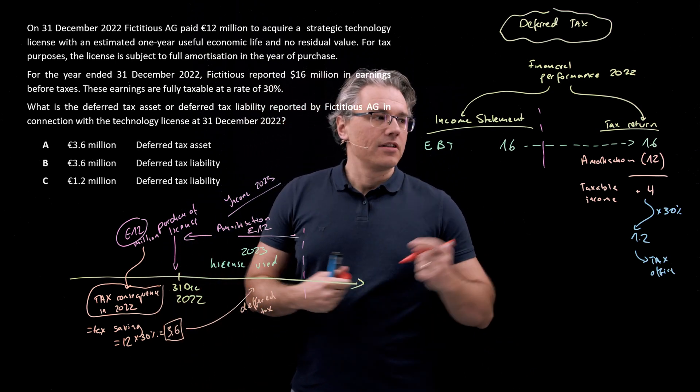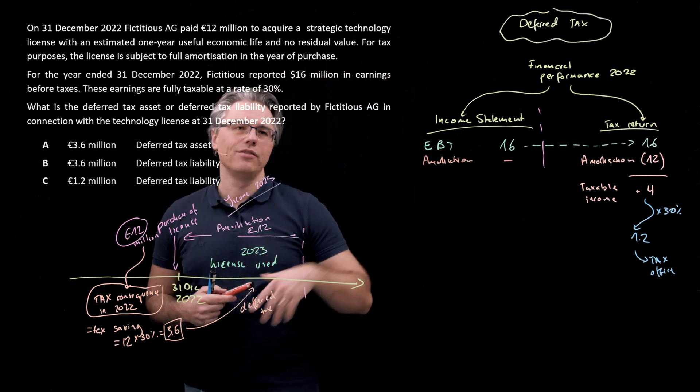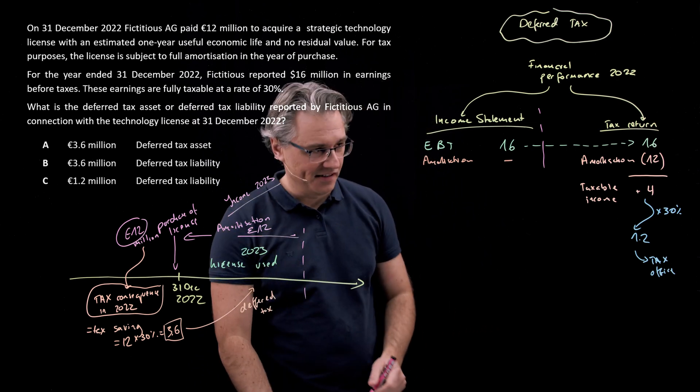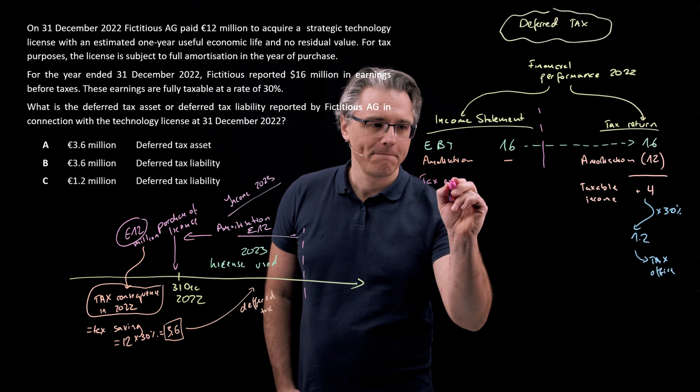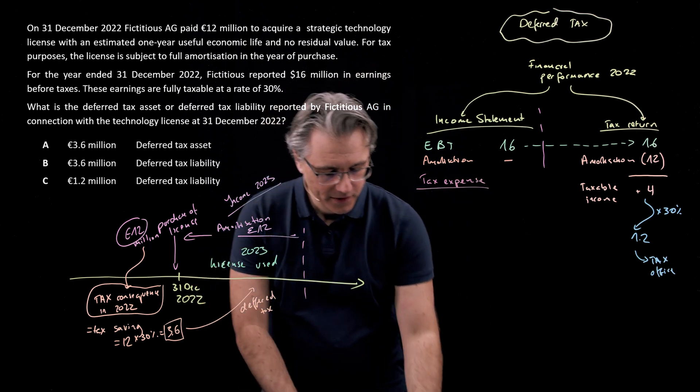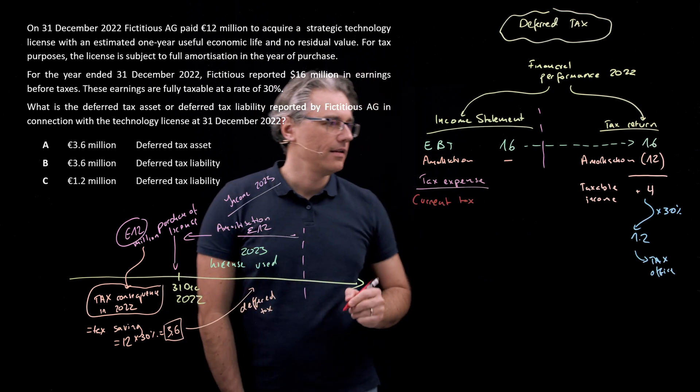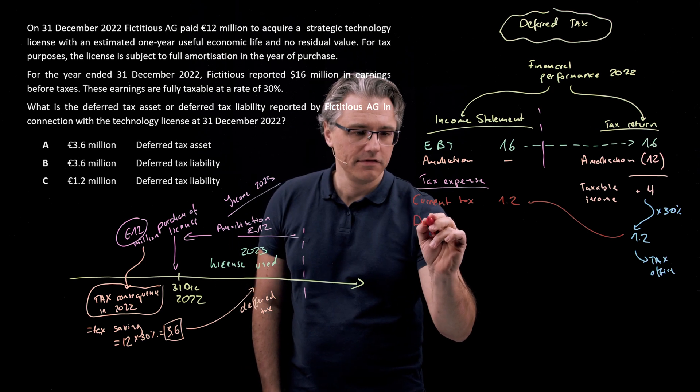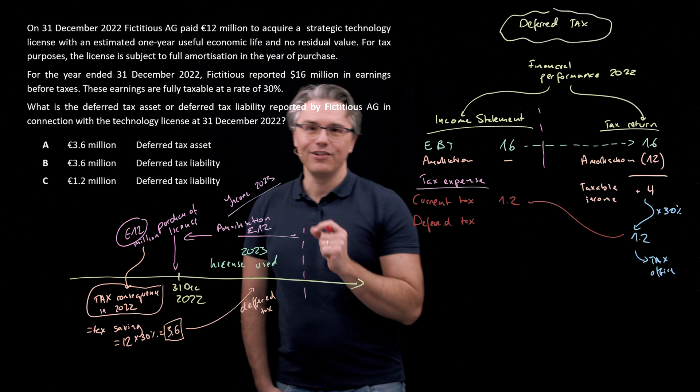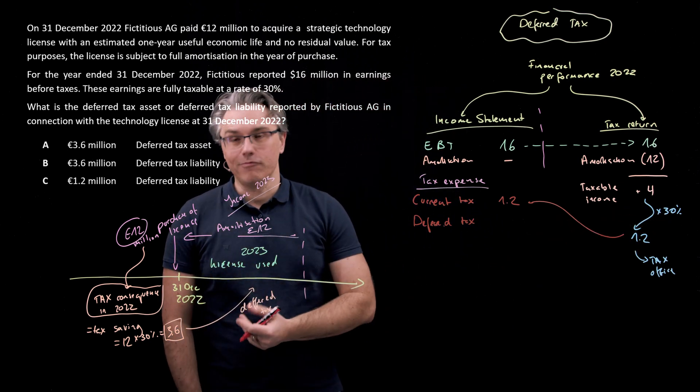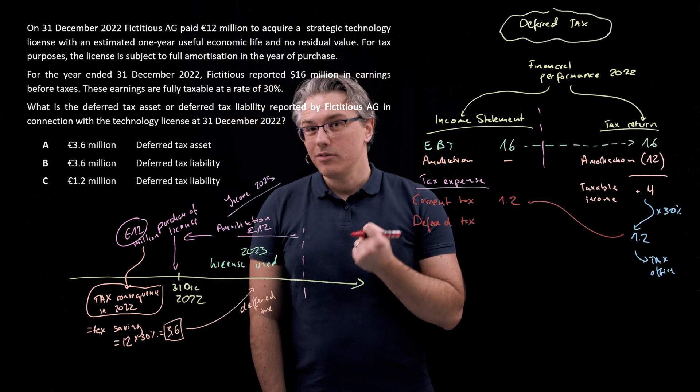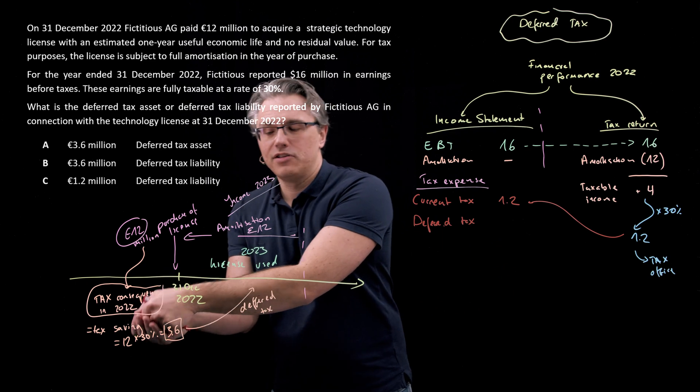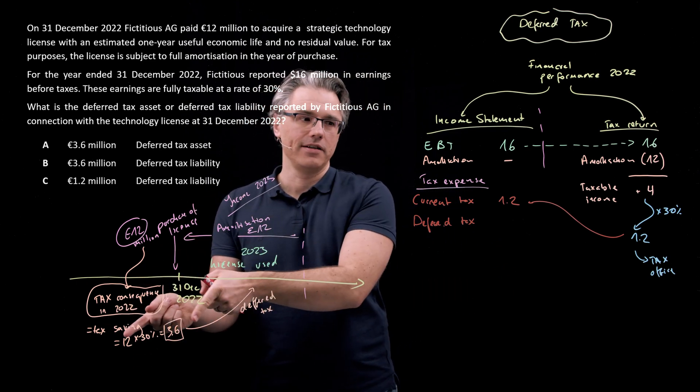So the whole job of deferred tax this time will be to make sure that this benefit enters the income statement in the same period when amortization hits it as well, to make things aligned. Amortization in the income statement for the first year doesn't exist, we're not amortizing the asset. But our tax expense is going to be composed of two things as before: current tax, that is the amount 1.2, and on top of this we're going to have deferred tax.